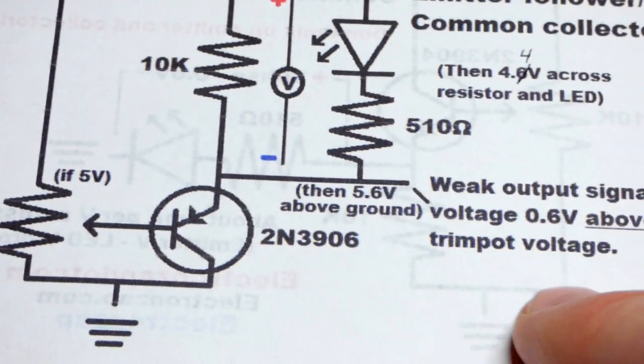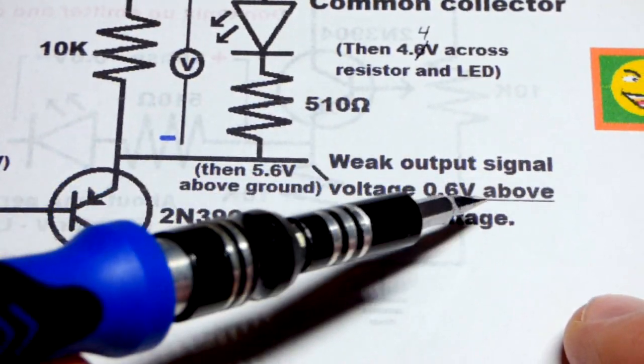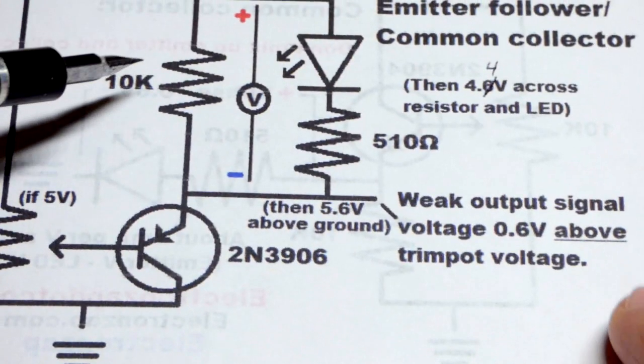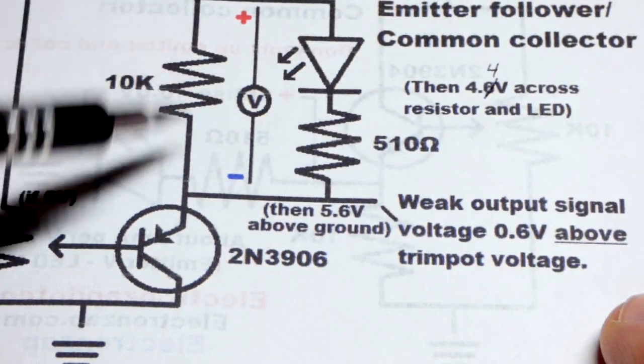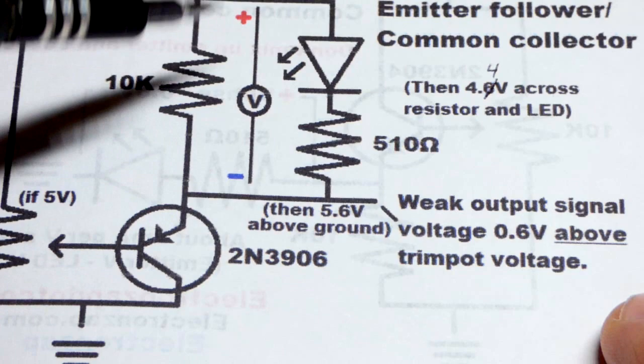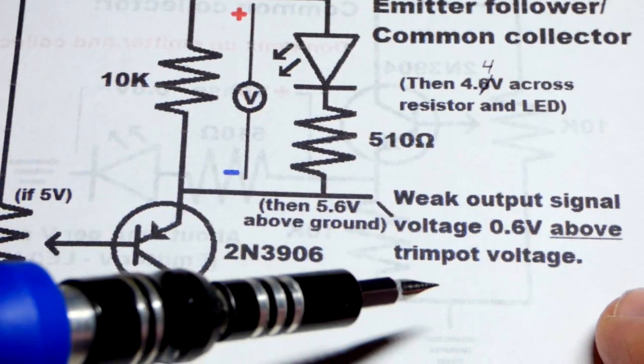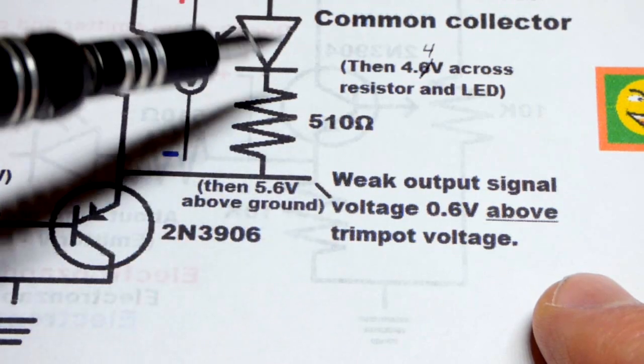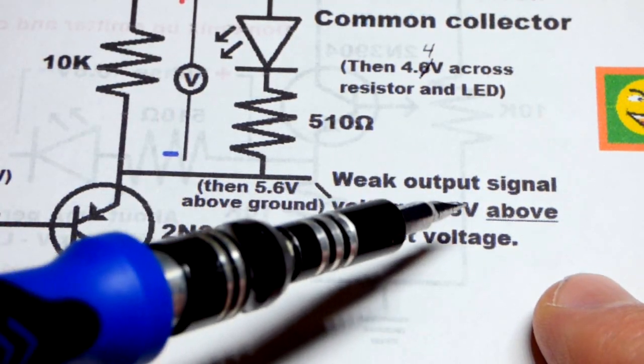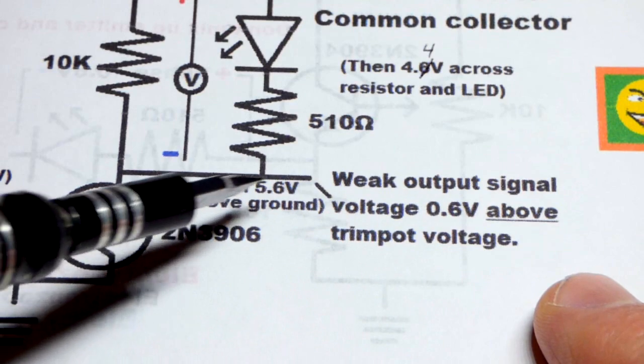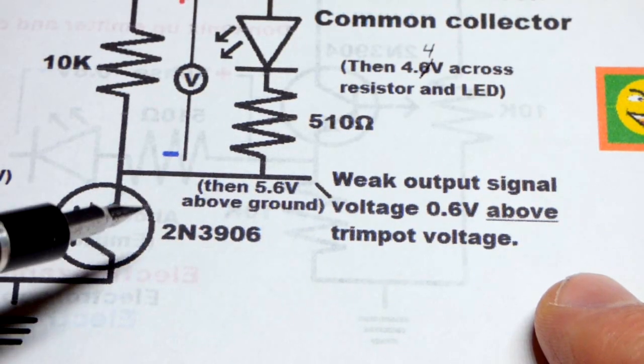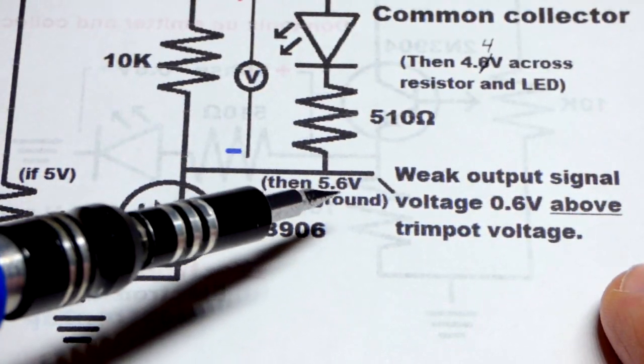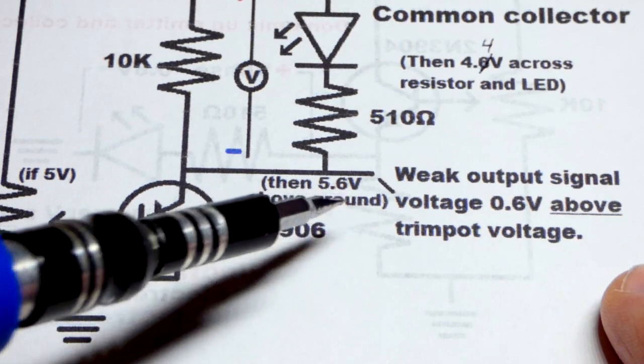So that works good if you want an output signal. You can see we got a 10 kilohm resistor there. We can modify that, but really it's not good for providing a lot of current to power like an LED or something. But it is good for a weak signal. You give that voltage to another transistor, an NPN bipolar junction transistor. That's probably what we'll do in the next video.